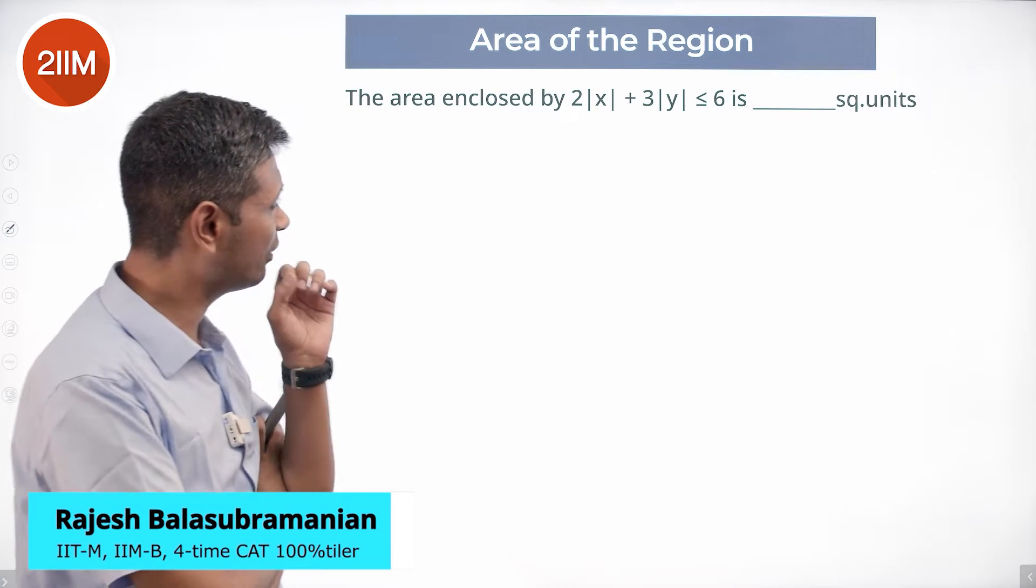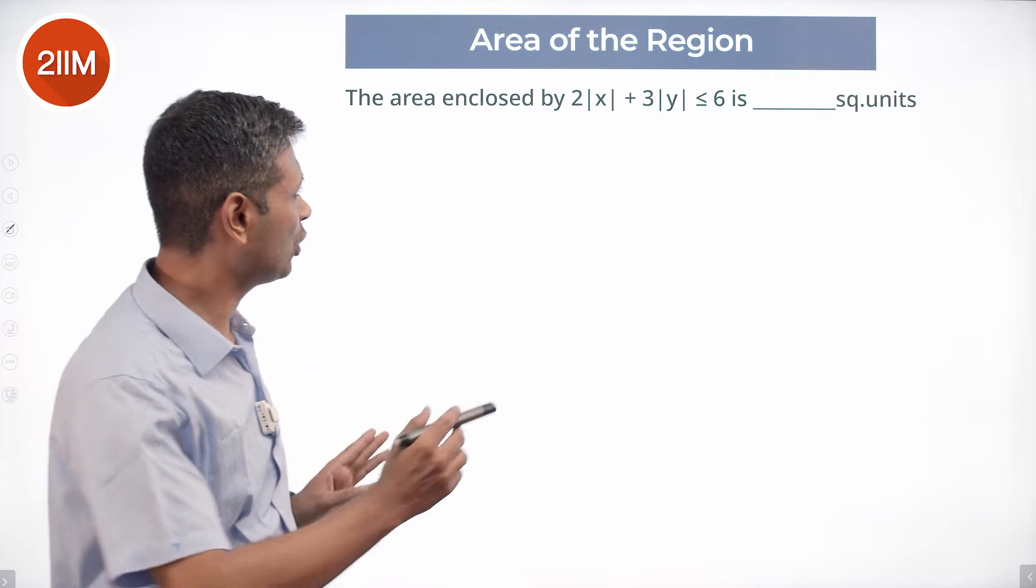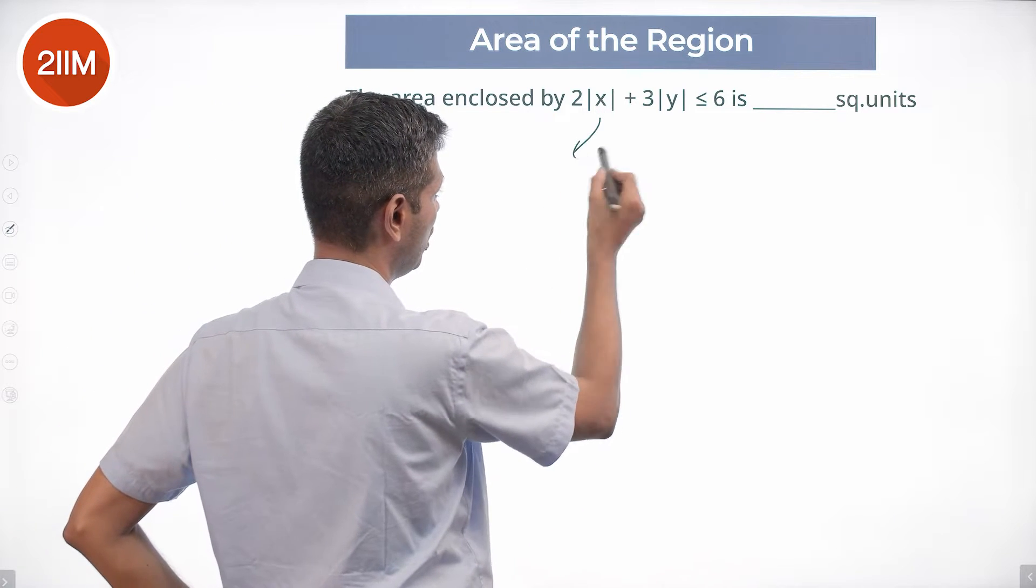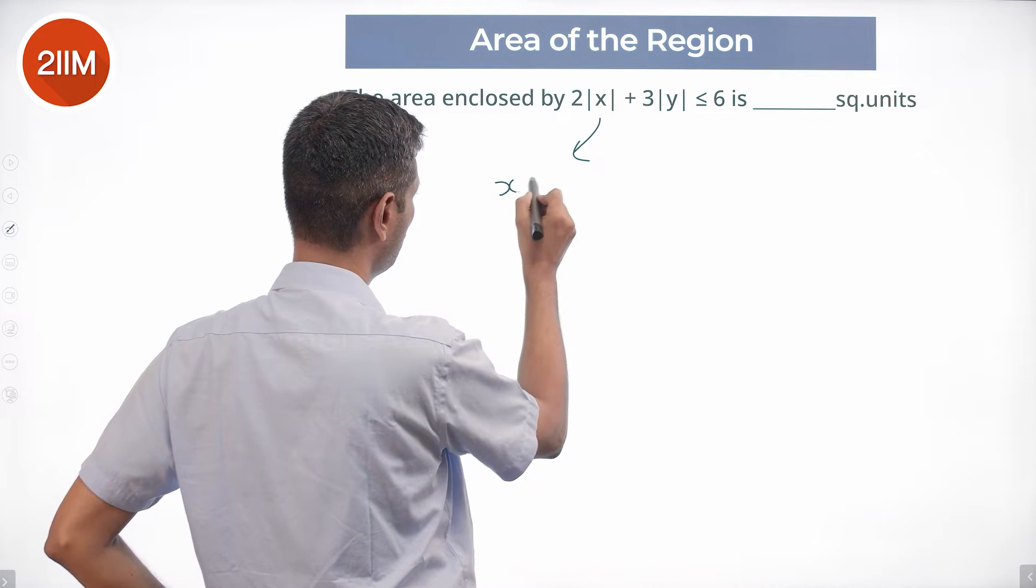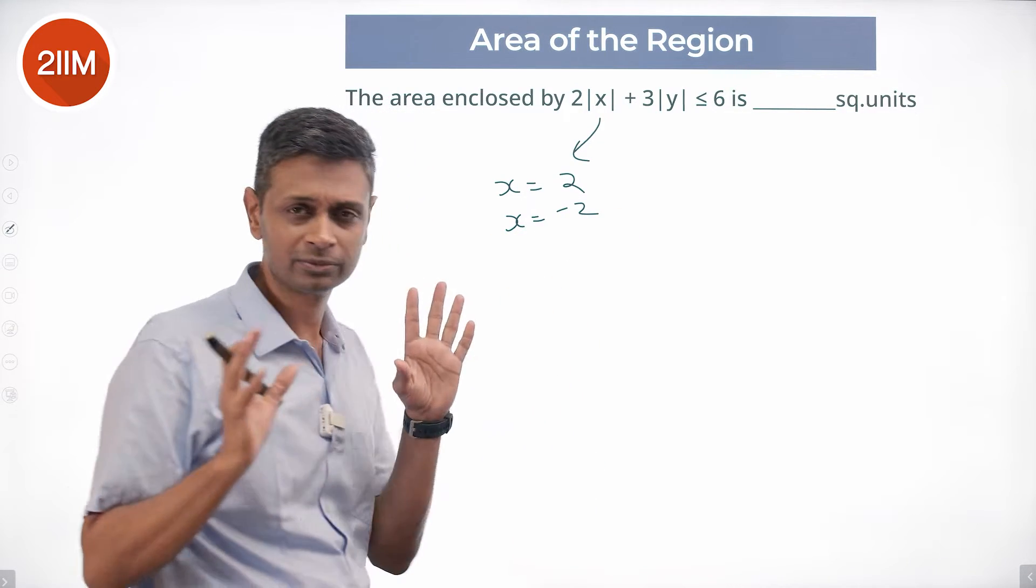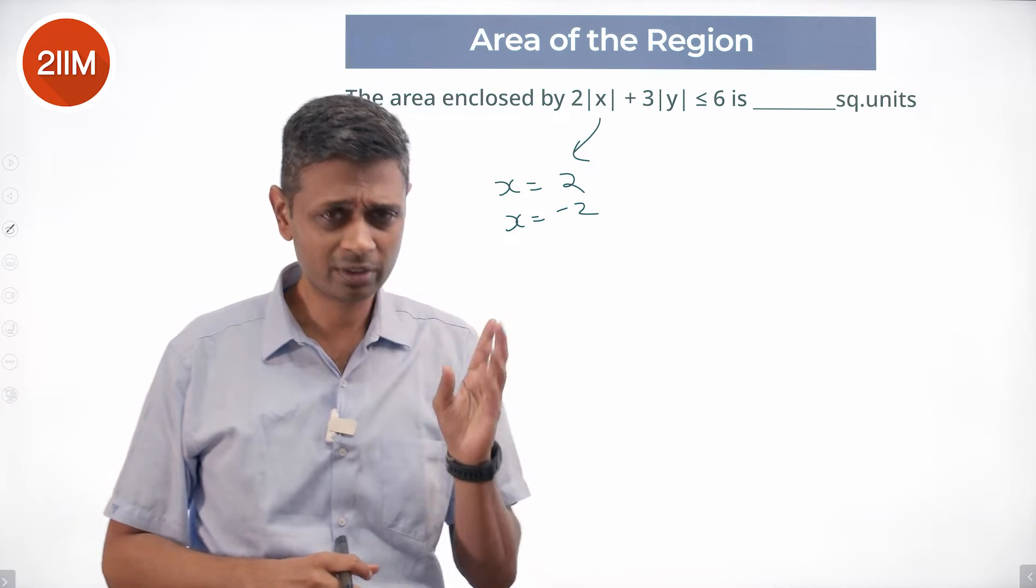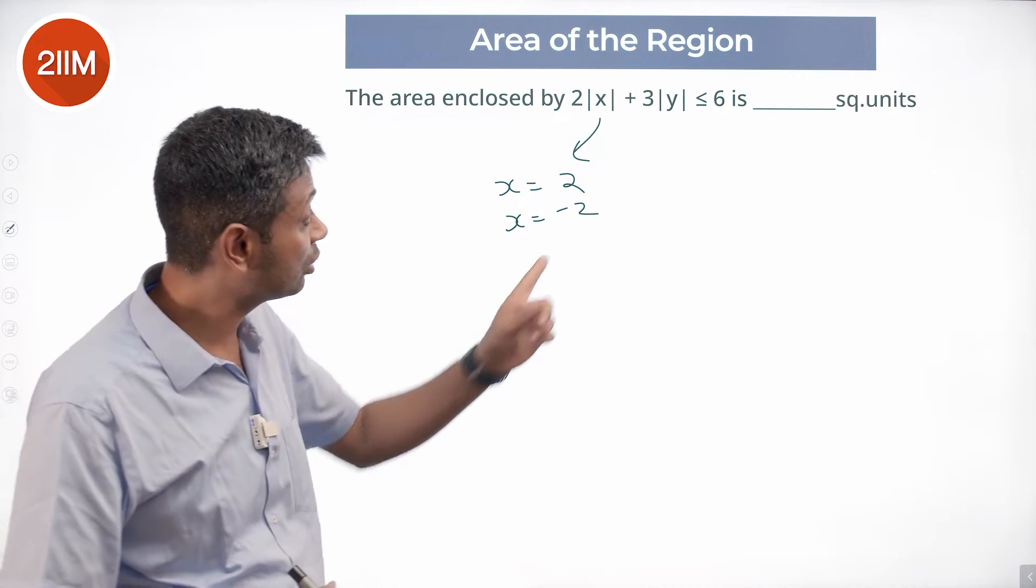Beautiful question, particularly interesting to deal with mod x and mod y. First of all, whenever modulus is involved, we know if x equals 2 satisfies it, x equals minus 2 will satisfy it in some form. Whatever satisfying means, if x equals 2 works, x equals minus 2 will work. There's a mod sitting here as well.